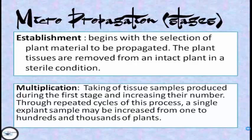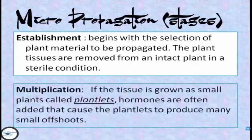The second process is multiplication. After establishment, this process involves taking tissue samples produced during the first stage and increasing their number. Through repeated cycles of this process, a single explant sample may be increased from one to hundreds and thousands of plants. If the tissue is grown as small plants called plantlets, hormones are often added that cause the plantlets to produce many small upshoots.